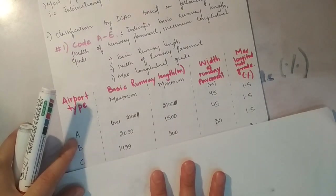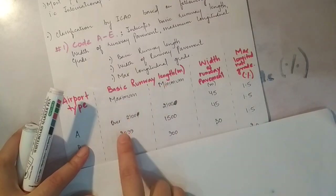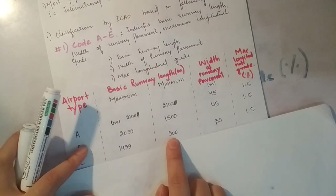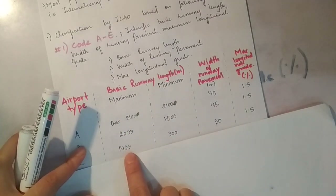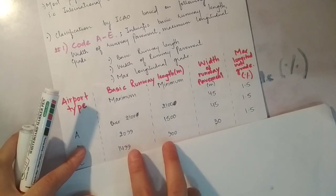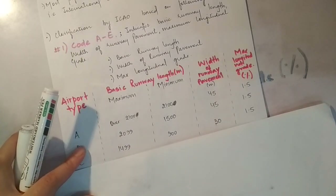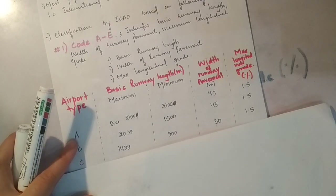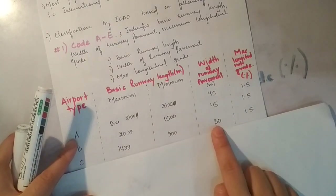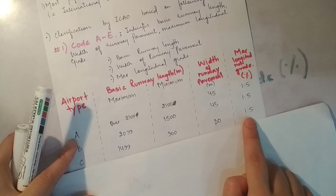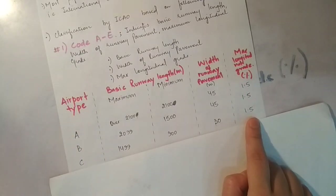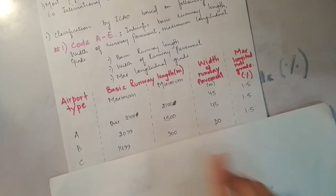Type C airport की basic runway length 900 meters to 1499 meters range करती है — जब यह length आए तो airport का type C है। यहाँ पर width of the pavement 30 meters होनी चाहिए और maximum longitudinal grade 1.5% होना चाहिए। अभी तक A, B और C type of airports में longitudinal grade 1.5 आ रहा है, और A और B में width of pavement same 45 meters है।